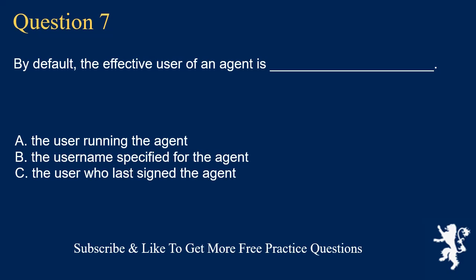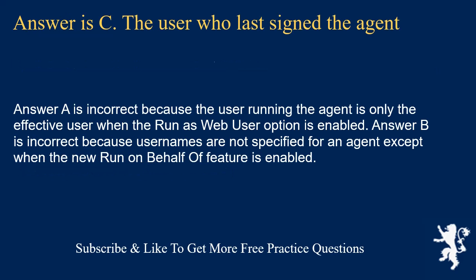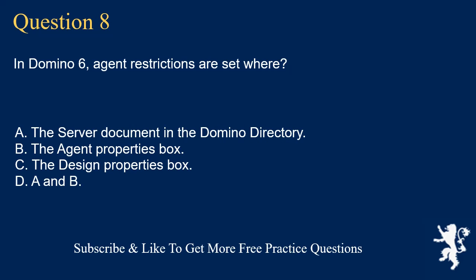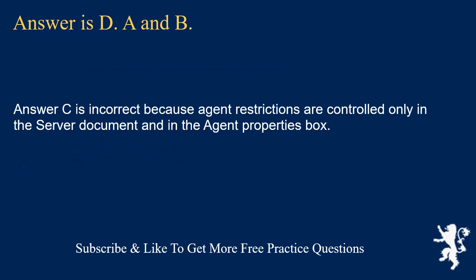Question 7. By default, the effective user of an agent is the user who last signed the agent. Answer is C. Answer A is incorrect because the user running the agent is only the effective user when the run as web user option is enabled. Answer B is incorrect because usernames are not specified for an agent except when the new run on behalf of feature is enabled. Question 8. In Domino 6, agent restrictions are set where? The server document in the Domino directory. The agent properties box. The design properties box. Both A and B. Answer is D: A and B. Answer C is incorrect because agent restrictions are controlled only in the server document and in the agent properties box.